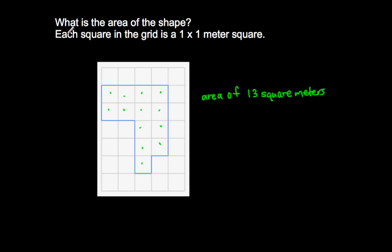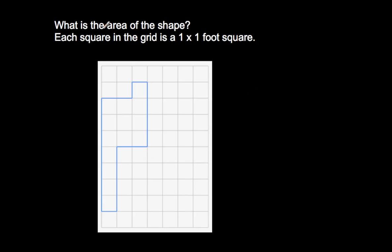Let's do one more just to see if it sticks and see if you can really apply it. What is the area of the shape? Each square in the grid is a one-by-one, or one times one foot square. If it's a square that has length one, this is called a square unit — and what kind of unit is it? It is a square foot. We can begin counting them to figure out how many square feet are in this shape highlighted in blue. I'm going to pause the video; try to find the area on your own and then unpause when you have figured it out.